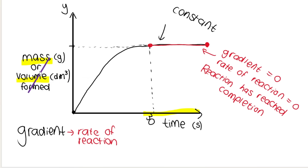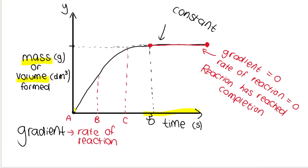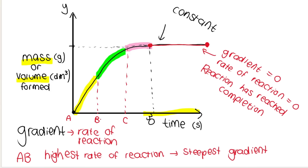A tangent is a straight line touching the curve. If you take the gradient of this tangent, you can see that in the beginning the gradient of the curve is very steep, but as the reaction goes on, the gradient becomes less steep. The steepness of the line keeps decreasing until we get to a flat horizontal line where the gradient is zero. If I break up the graph into sections A to B, B to C, and C to completion, the segment A to B — the beginning of the reaction — has the highest rate of reaction because it has the steepest gradient. The gradient decreases as you go along the curve over time.